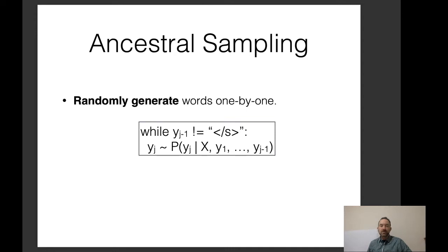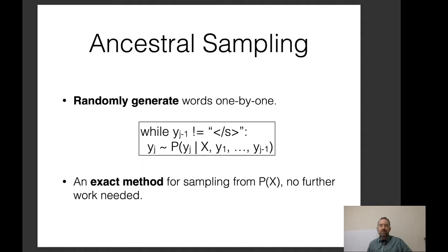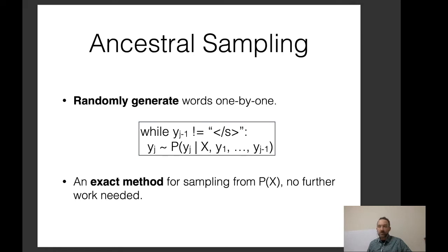This ancestral sampling method randomly generates words one by one. While we have not sampled the end-of-sentence symbol, we simply sample the next word according to the probability calculated by the model. Importantly, if our goal is to sample an output from this model, this is an exact method for sampling from P(Y|X). You'd never need another sampling algorithm if you simply want to sample from the model's probability distribution.